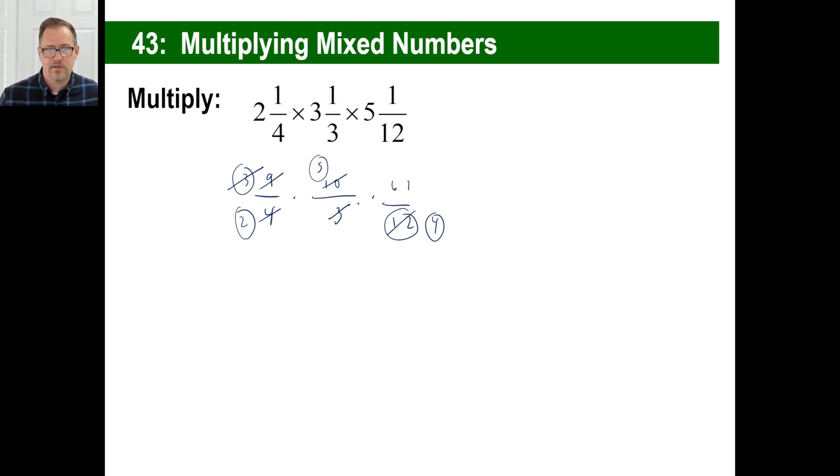Now we've got nothing else. We've got 5, 4, that's about all we can do. So 5 times 61, what's 5 times 60? 5 times 60 is 300, but one more. So 305. 2 times 4 is 8. There you go.